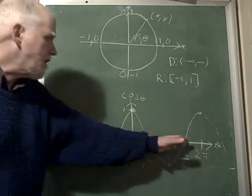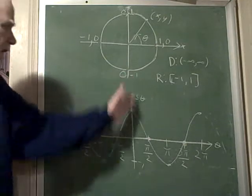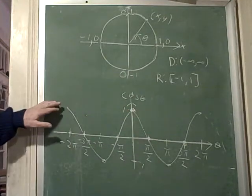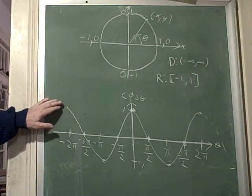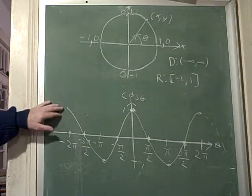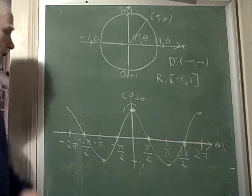So notice it's reflected directly across the vertical axis. That means it's an even function. That is, cosine of negative x equals cosine of x. And it's a very important fact.